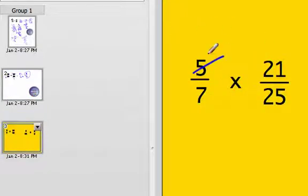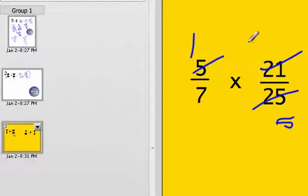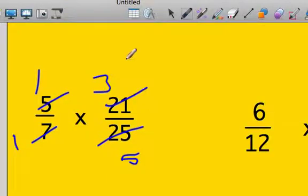Just a couple more problems to show you what's going on here. I can reduce the 5 here, make that a 1, make this number a 5. Make this a 3. Make this 7 right here a 1. And then it's pretty simple - 1 times 3 is 3, 1 times 5 is 5.